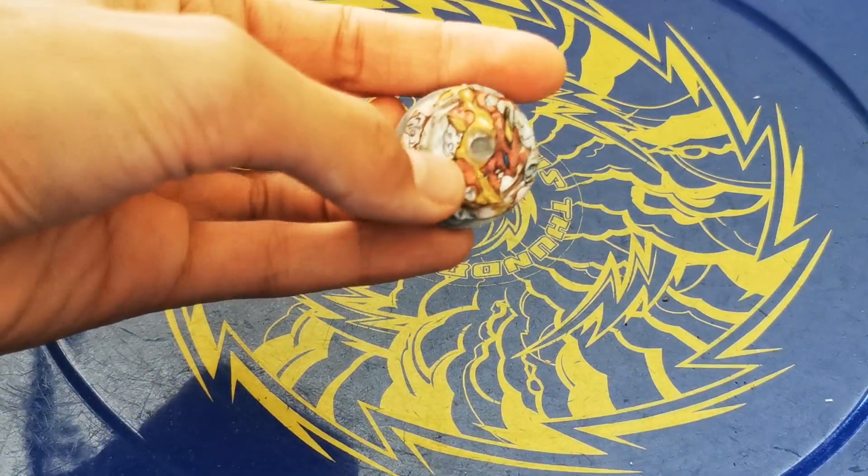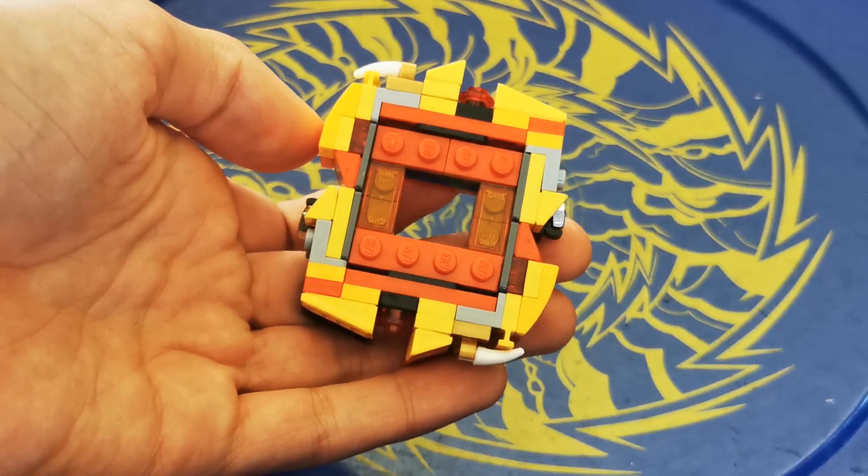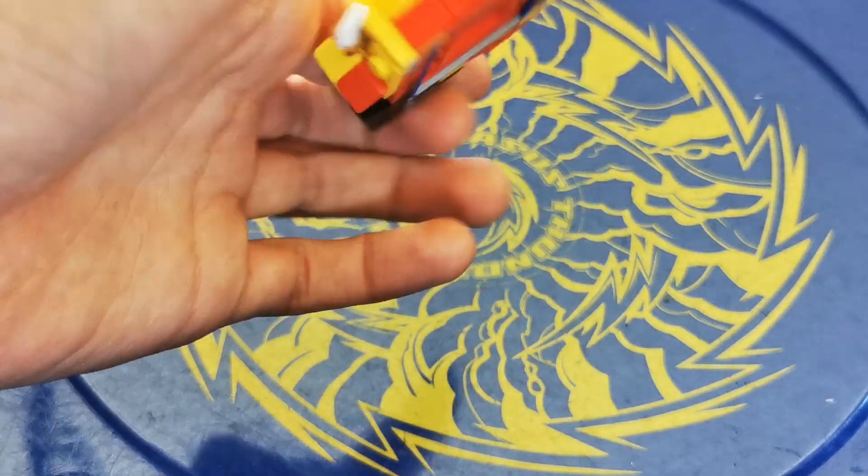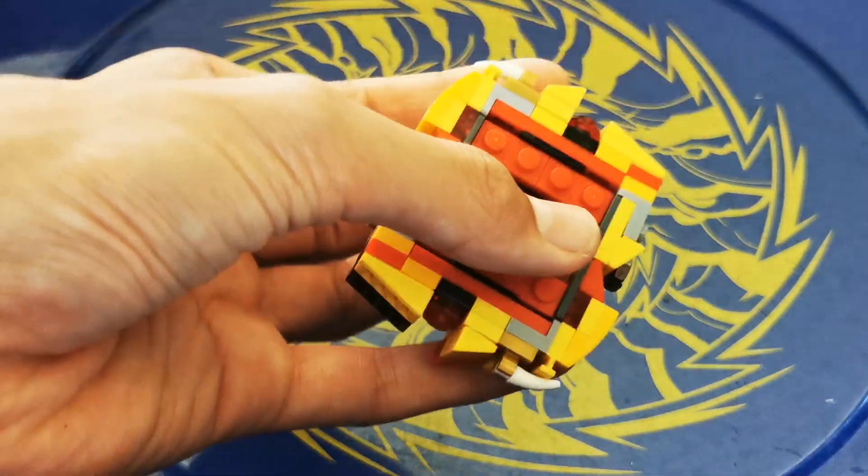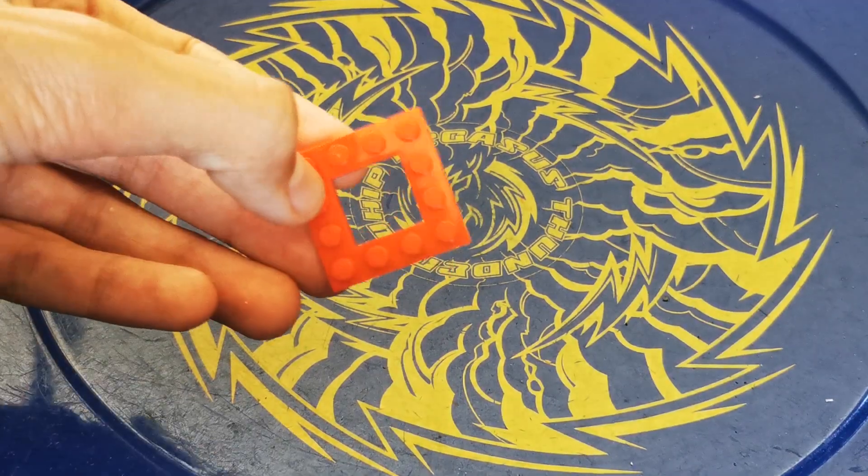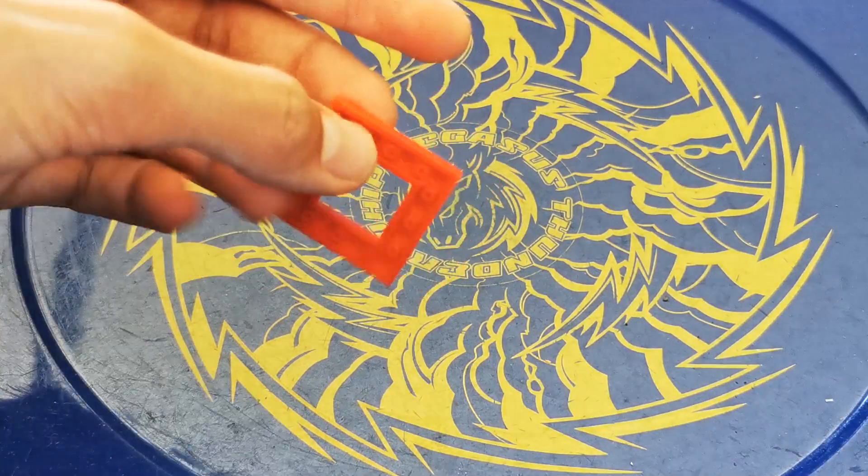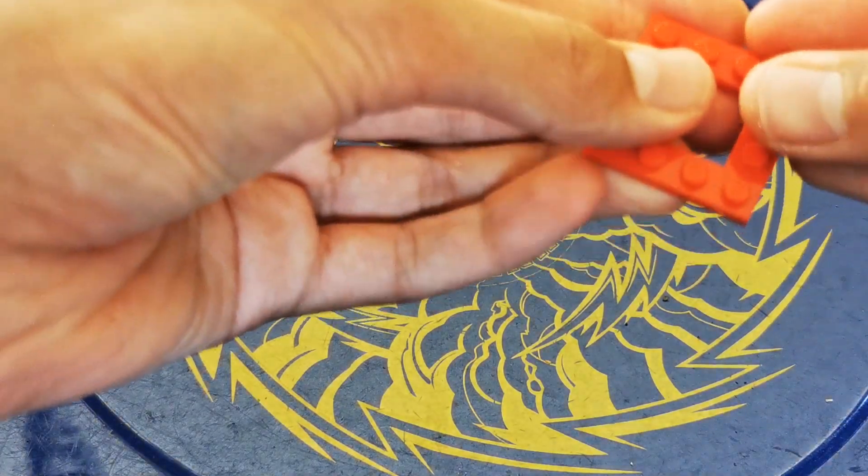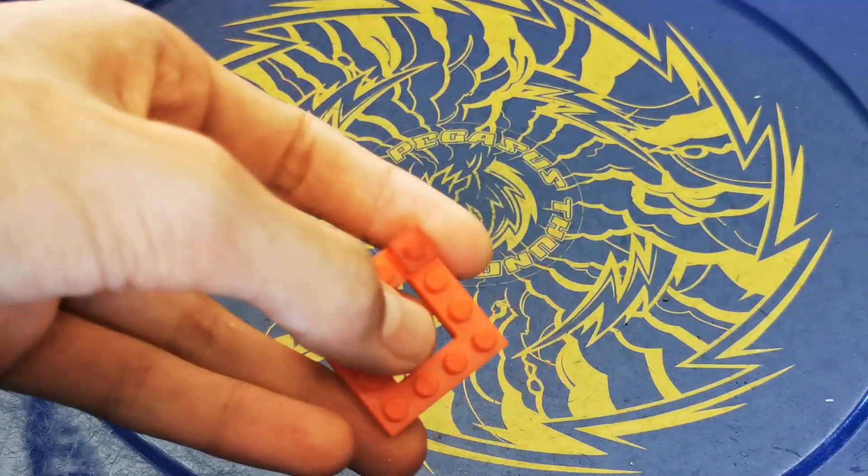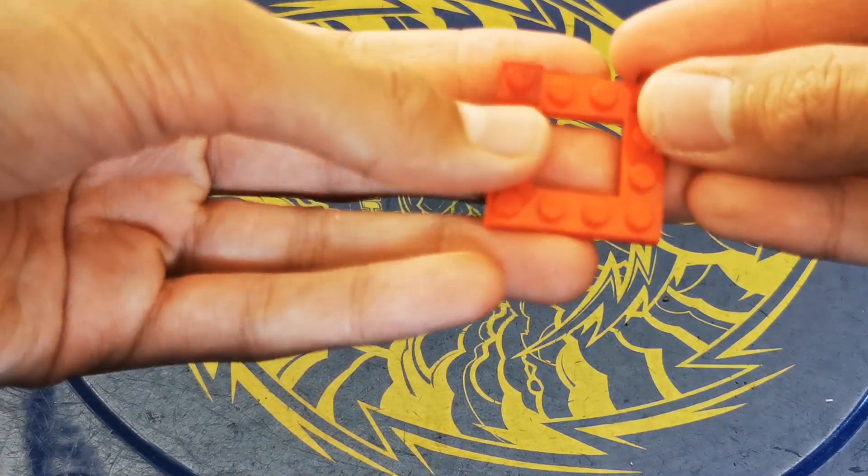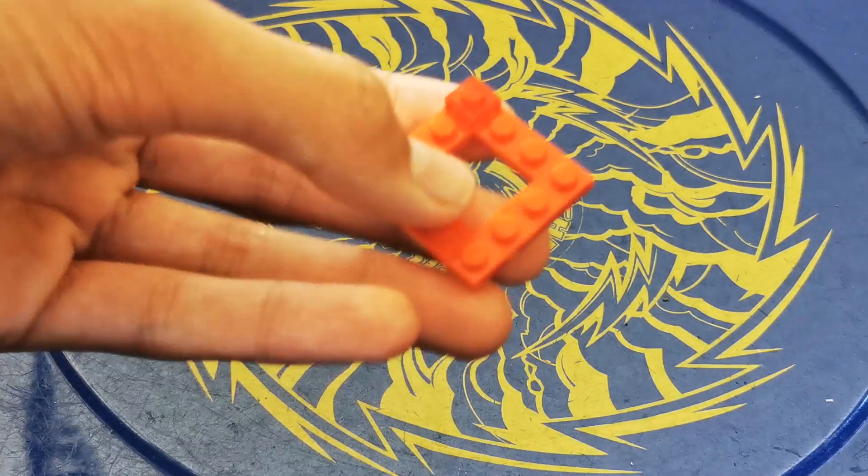And that is the core completed. Now for the layer burst, which is double-sided. First grab a 4x4 red tile missing a 2x2 tile in the middle, and then attach 1x1 see-through red square studs to each corner.